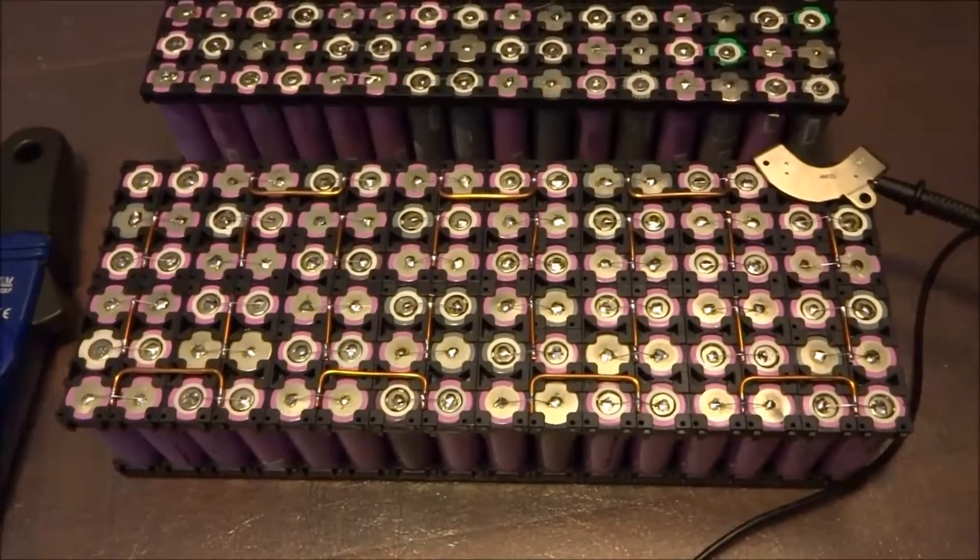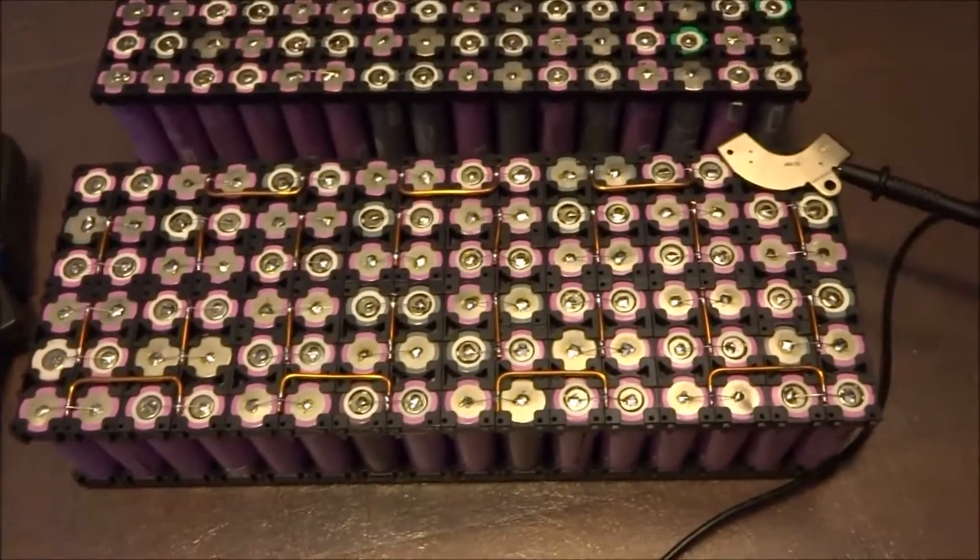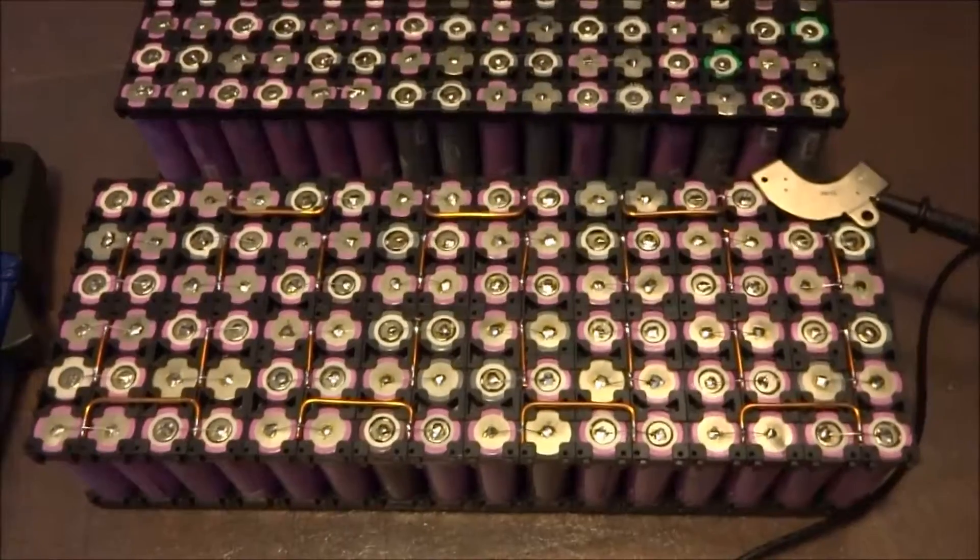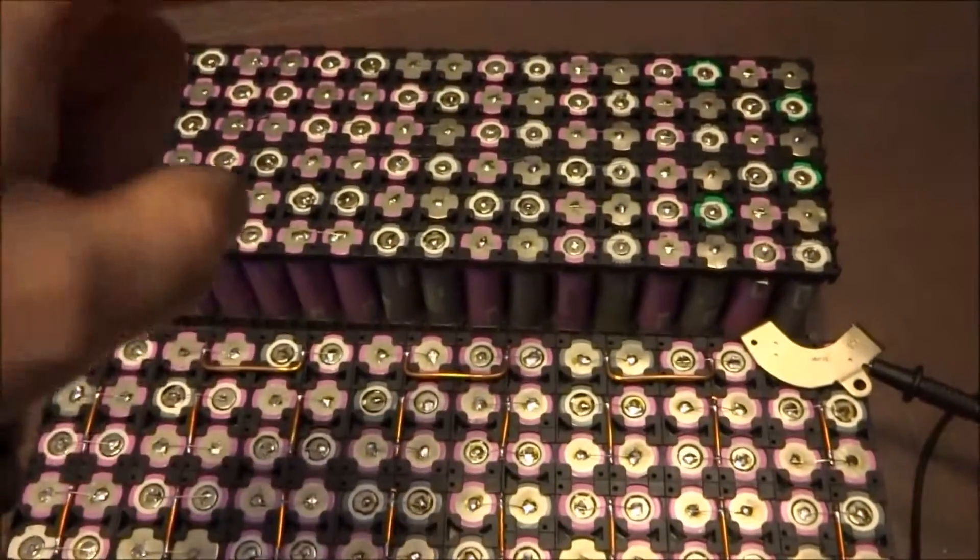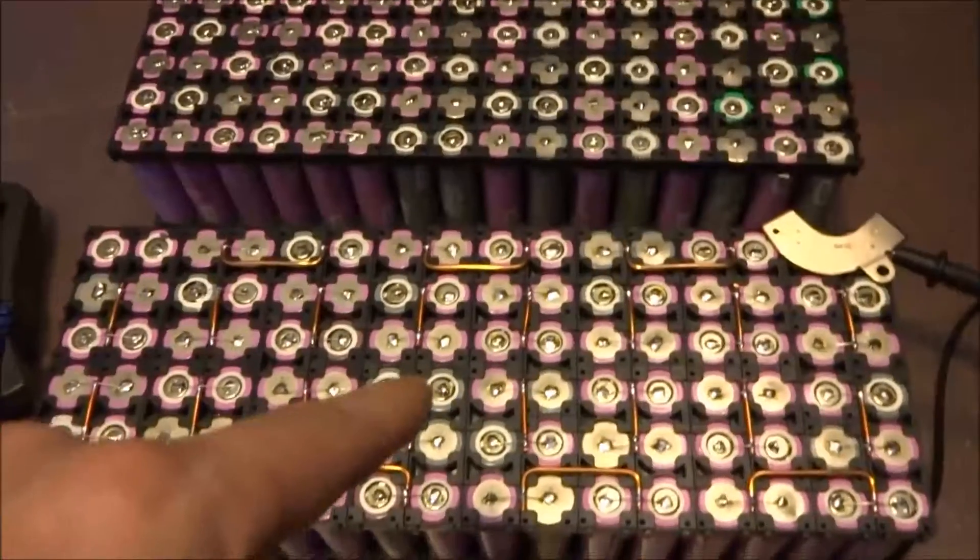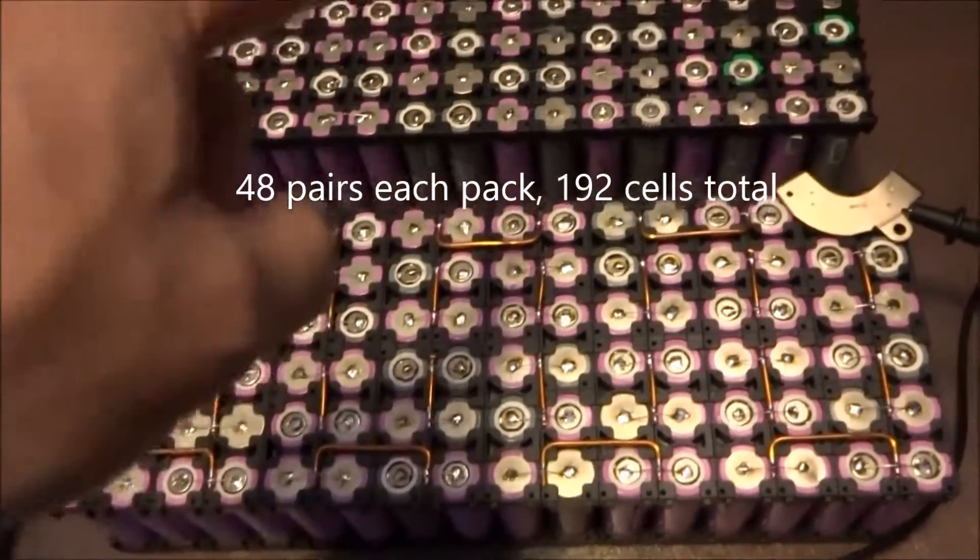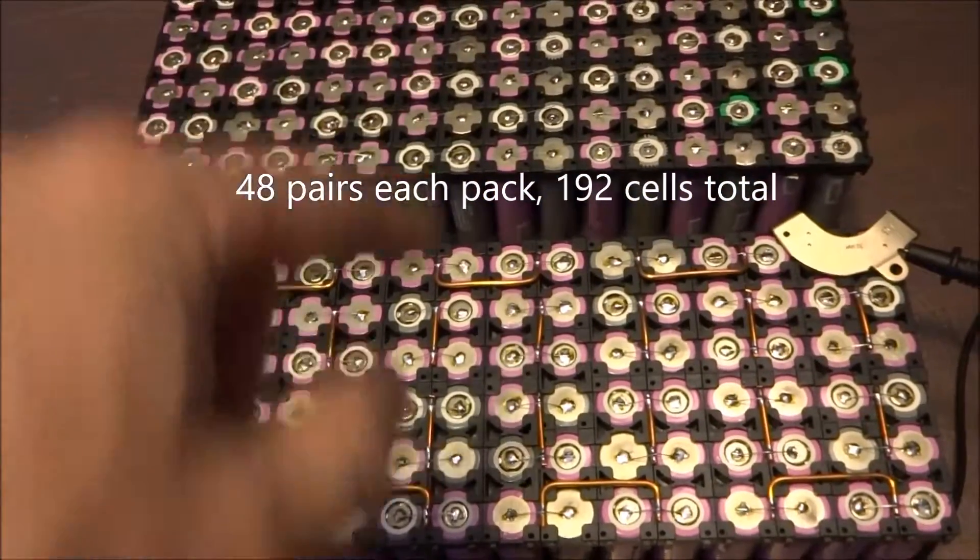This is just the test pack of 96 cells in series, two in parallel. As I said before, these are two halves. So here I got 48 and another 48, which makes it 96 total.